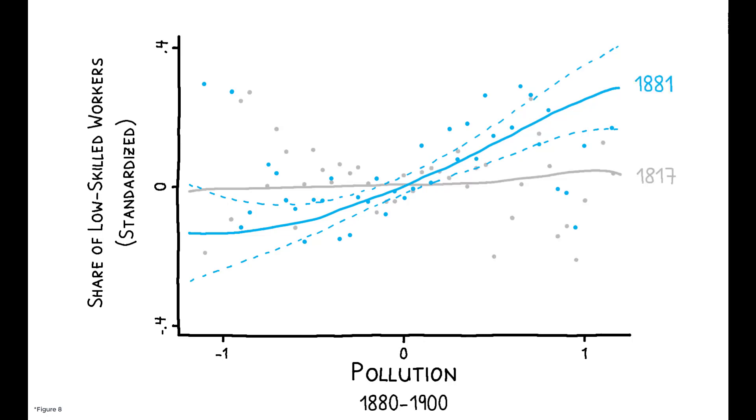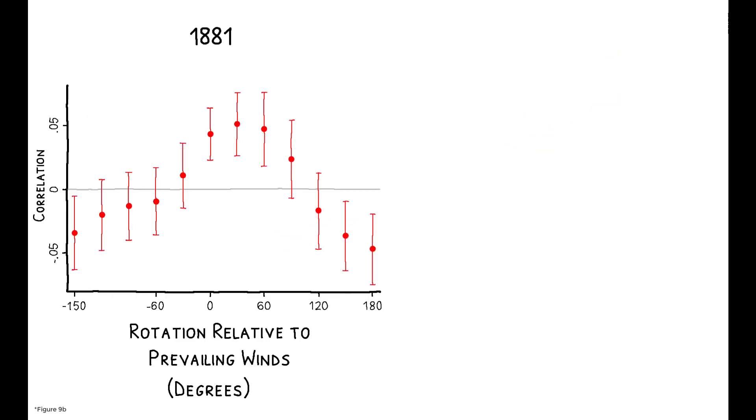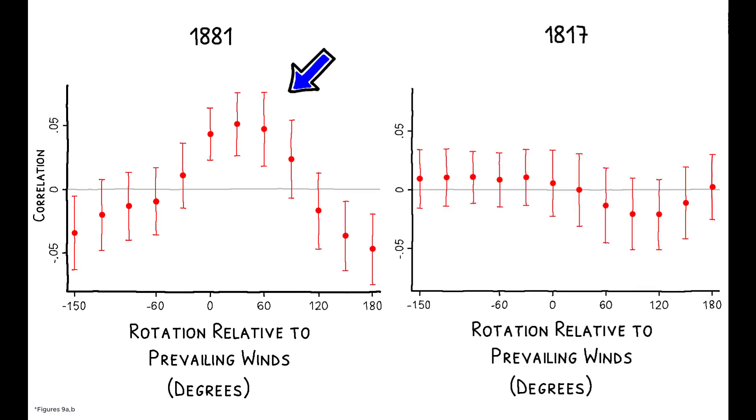Reassuringly, there is no correlation between pollution in 1880 to 1900 and the share of low-skilled workers in 1817, which predates the rise in coal use. To emphasize the role of prevailing winds in driving these results, this figure shows that if we control for neighborhood distance from pollution sources, there is excess deprivation in neighborhoods lying just in a narrow corridor downwind of industrial chimneys. Again, no such pattern exists if we look at neighborhood composition in 1817.